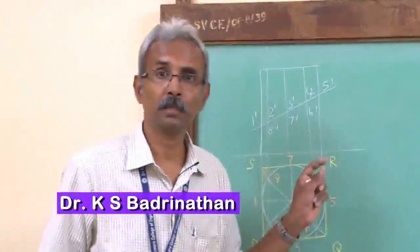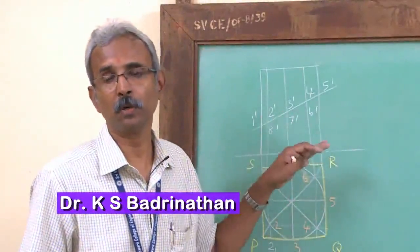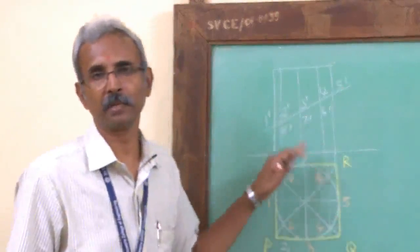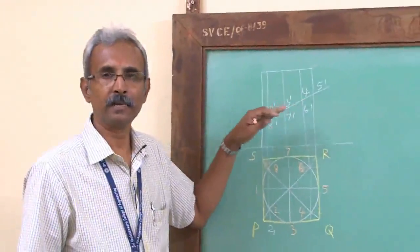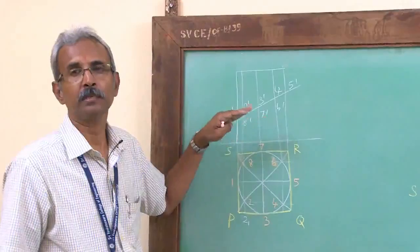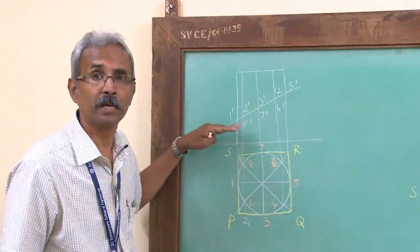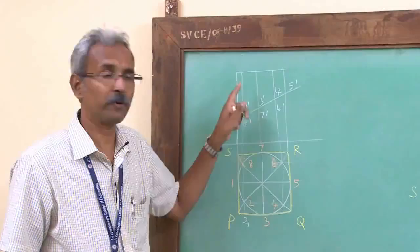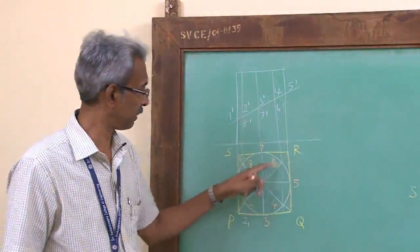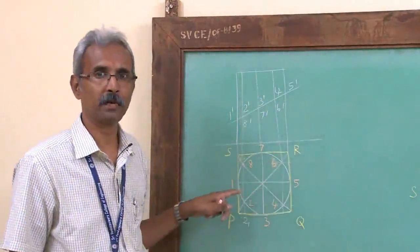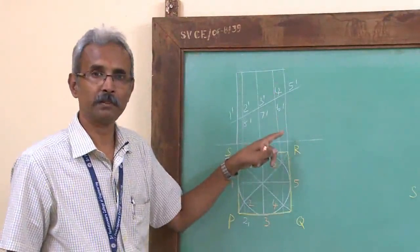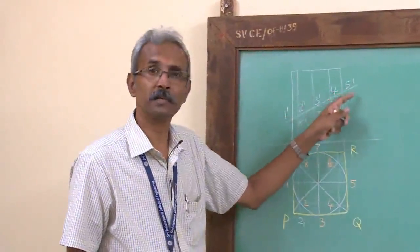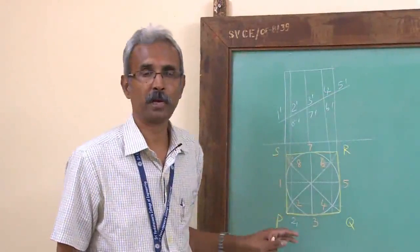Now we will draw the isometric view of a truncated cylinder. We have a cylinder of given diameter and height, with a section plane inclined at some angle to the HP such that it cuts all the generators. The top view and front view have been drawn, and section points marked. With 8 divisions of the circle, we get 8 generators and 8 section points: 1', 2', through 8', with corresponding top-view projections.